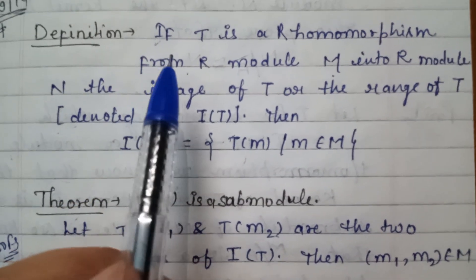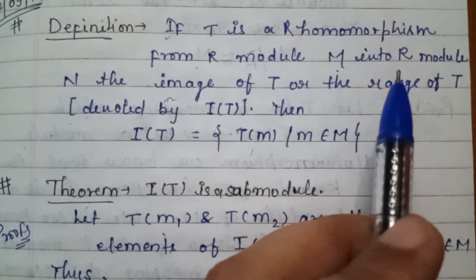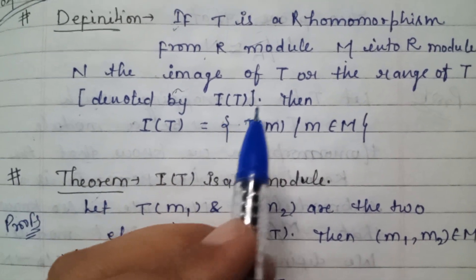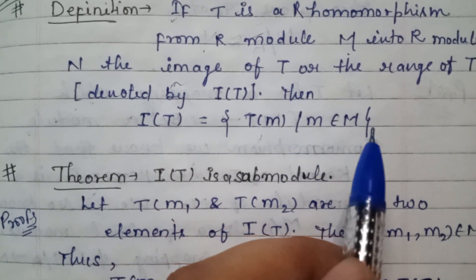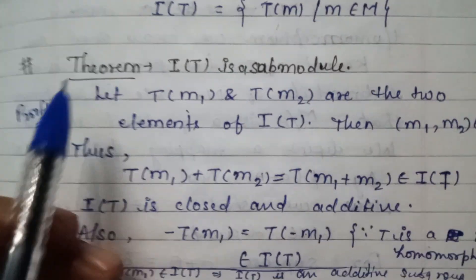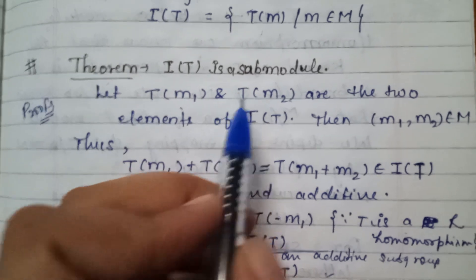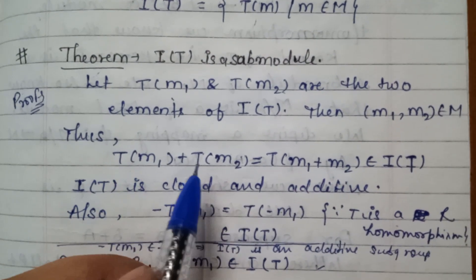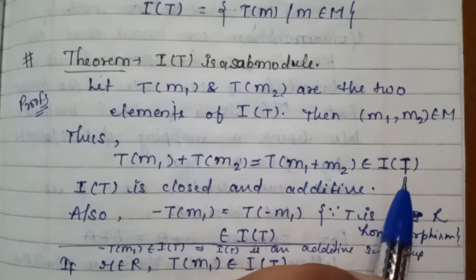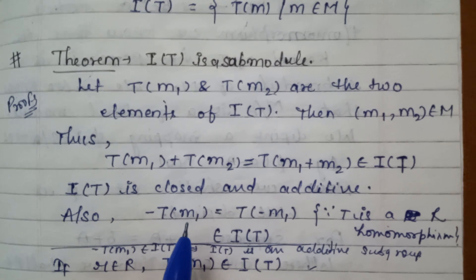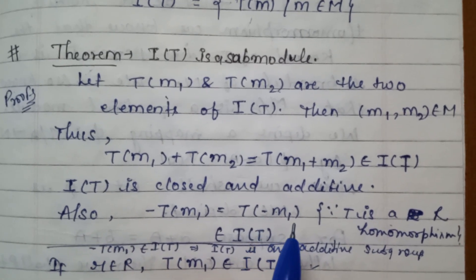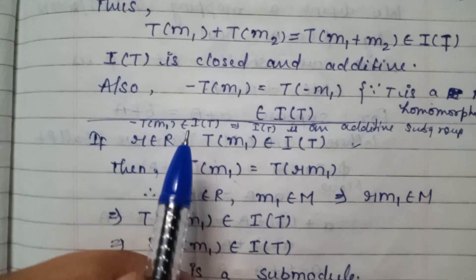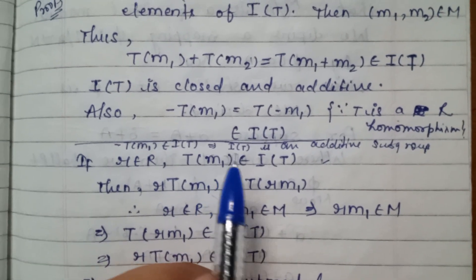There is another result: if T is an R-homomorphism from R-module M into R-module N, the image of T, or the range of T, denoted by Im(T), is equal to {T(m) : m belongs to M}, and it is a submodule. Let T(m1) and T(m2) be two elements of Im(T), then m1, m2 belong to M, and T(m1) + T(m2) = T(m1 + m2) belongs to Im(T), so it is closed under addition. Also, -T(m1) = T(-m1), since T is an R-homomorphism, which belongs to Im(T). So Im(T) is an additive subgroup.